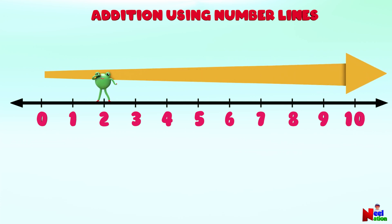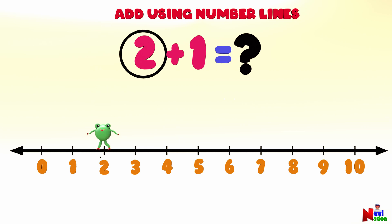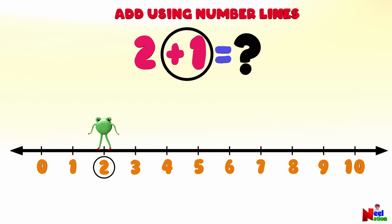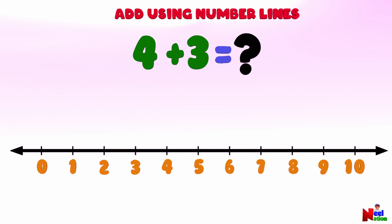Okay, let's begin. What is 2 plus 1? Can you find number 2 on the number line? Here you go. To add 1 to number 2, starting from number 2, Mr. Lutu will jump one point forward to the right. Where did he land? Number 3! So 2 plus 1 equals 3. You got it!